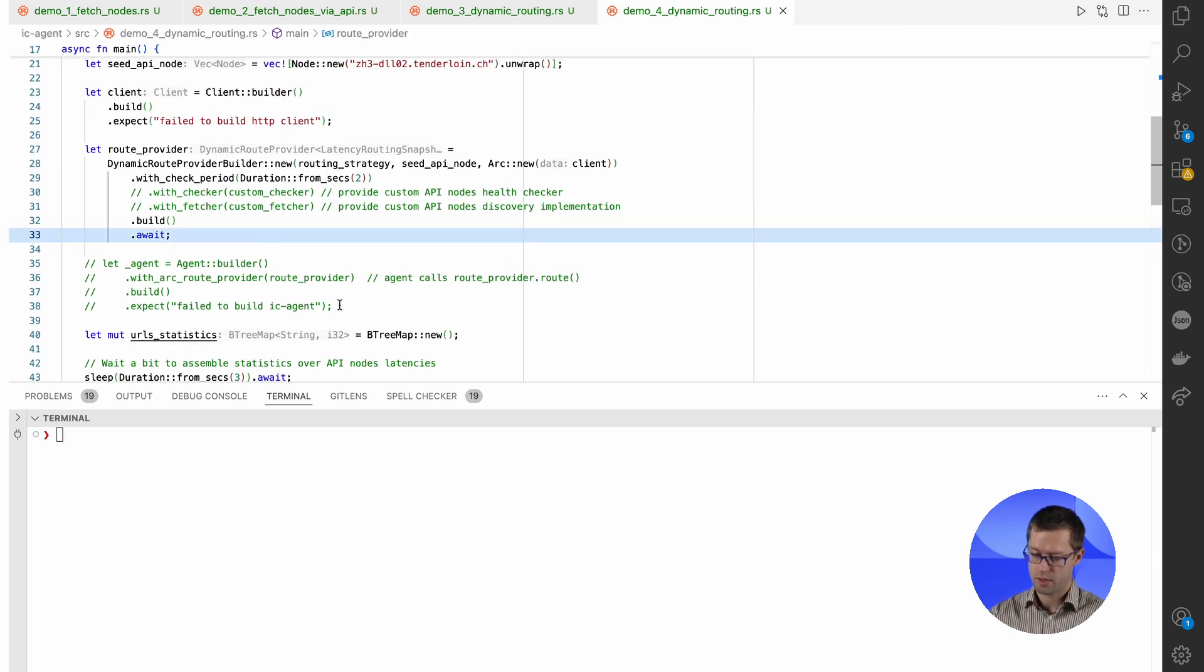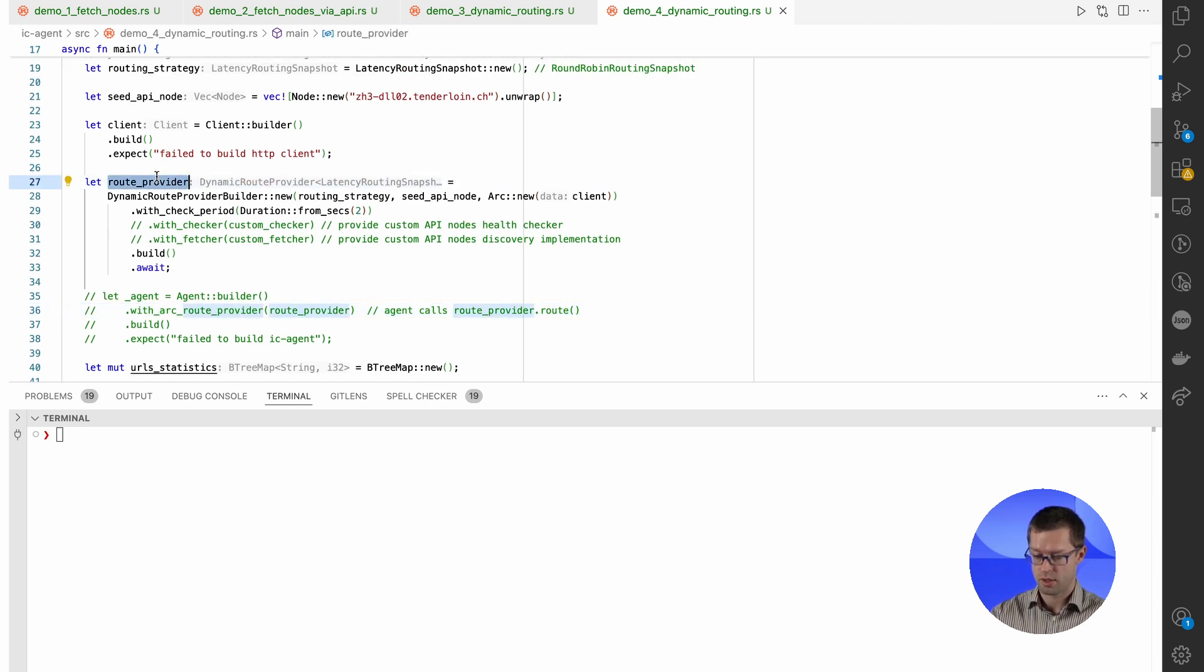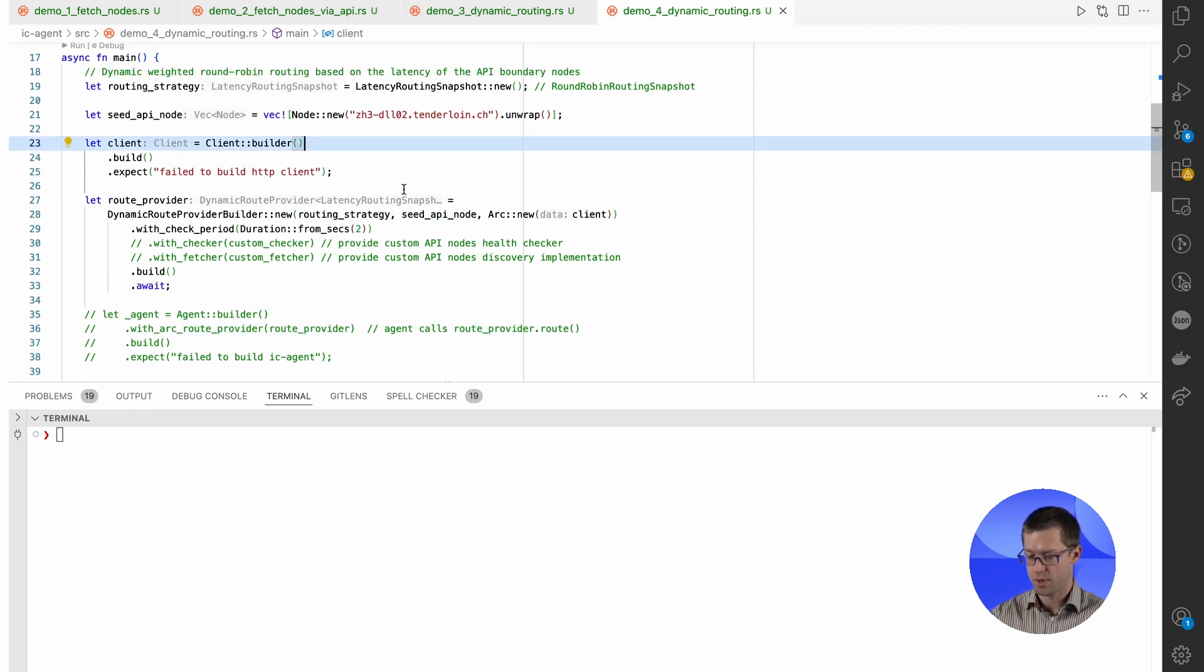Here, we could create an agent as we did before, but now with arc route provider argument. And route provider is the core service, which is doing this discovery and health checking services in the background. So we could instantiate this route provider instance by providing seed API nodes, routing strategy, which I will talk in a moment, and some custom HTTP client.